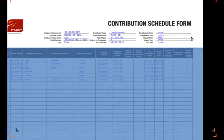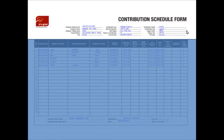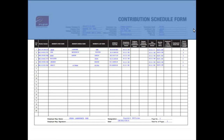For example, if the wages are paid in May, then the contribution month will be June. With that sorted, let's move on to the bottom part of the form. This part covers details about your employees, which is necessary for FNPF to post funds accordingly to their individual accounts.